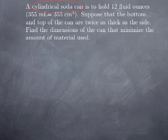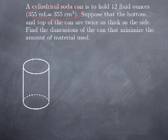We're trying to design a cylindrical can, so here is a cylinder. We want to find the dimensions that minimize the amount of material used, so we need to introduce variables for the dimensions. For a cylinder, the dimensions are the radius of the circular base and the height.